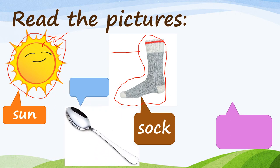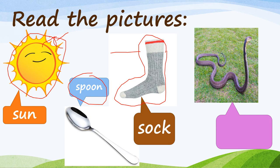Next picture — that one you use when you are eating your food. It's a spoon! And then we have the last picture — oh my, it's an animal! What kind of animal is this? Snake! So we have snake.